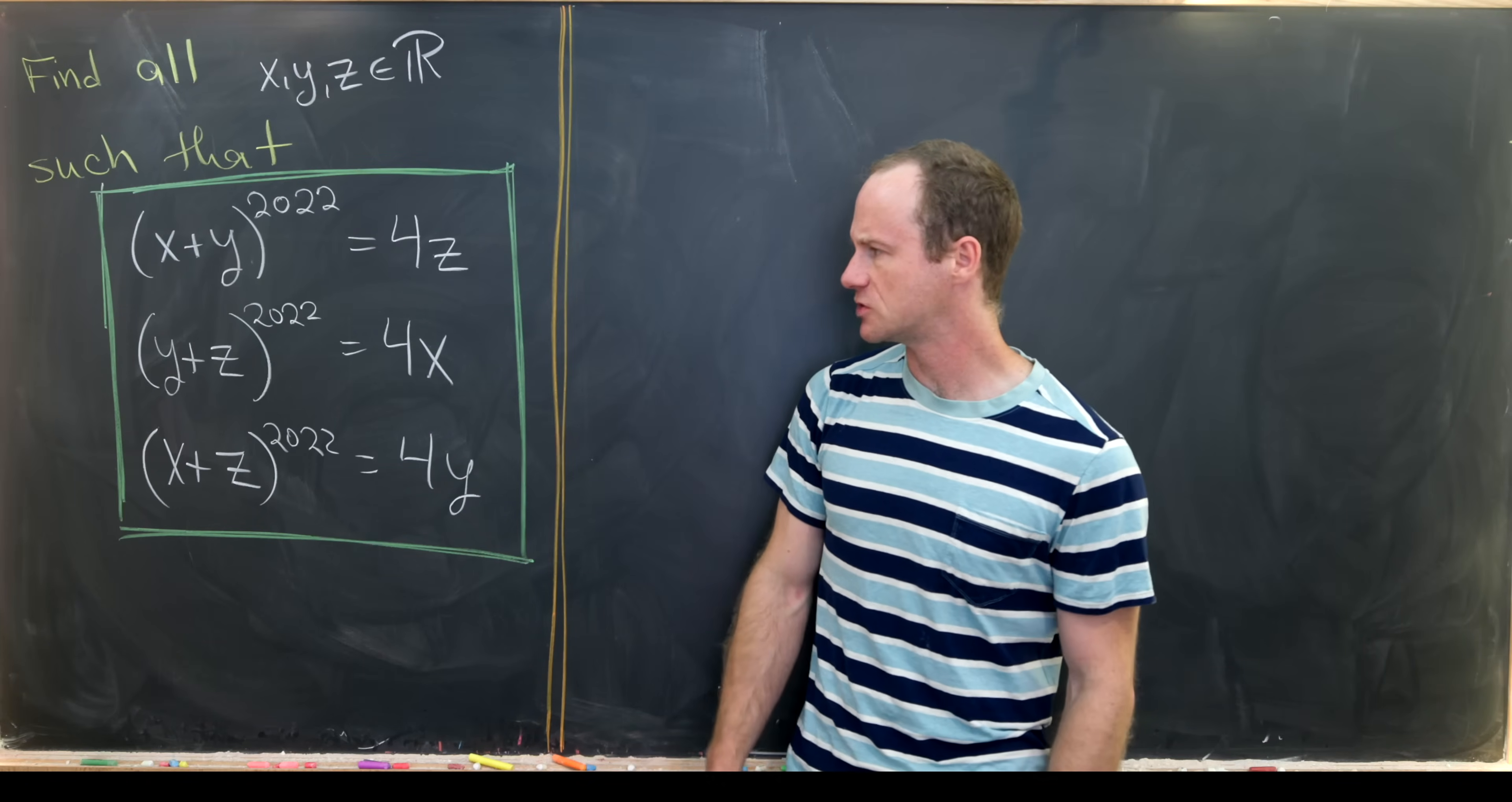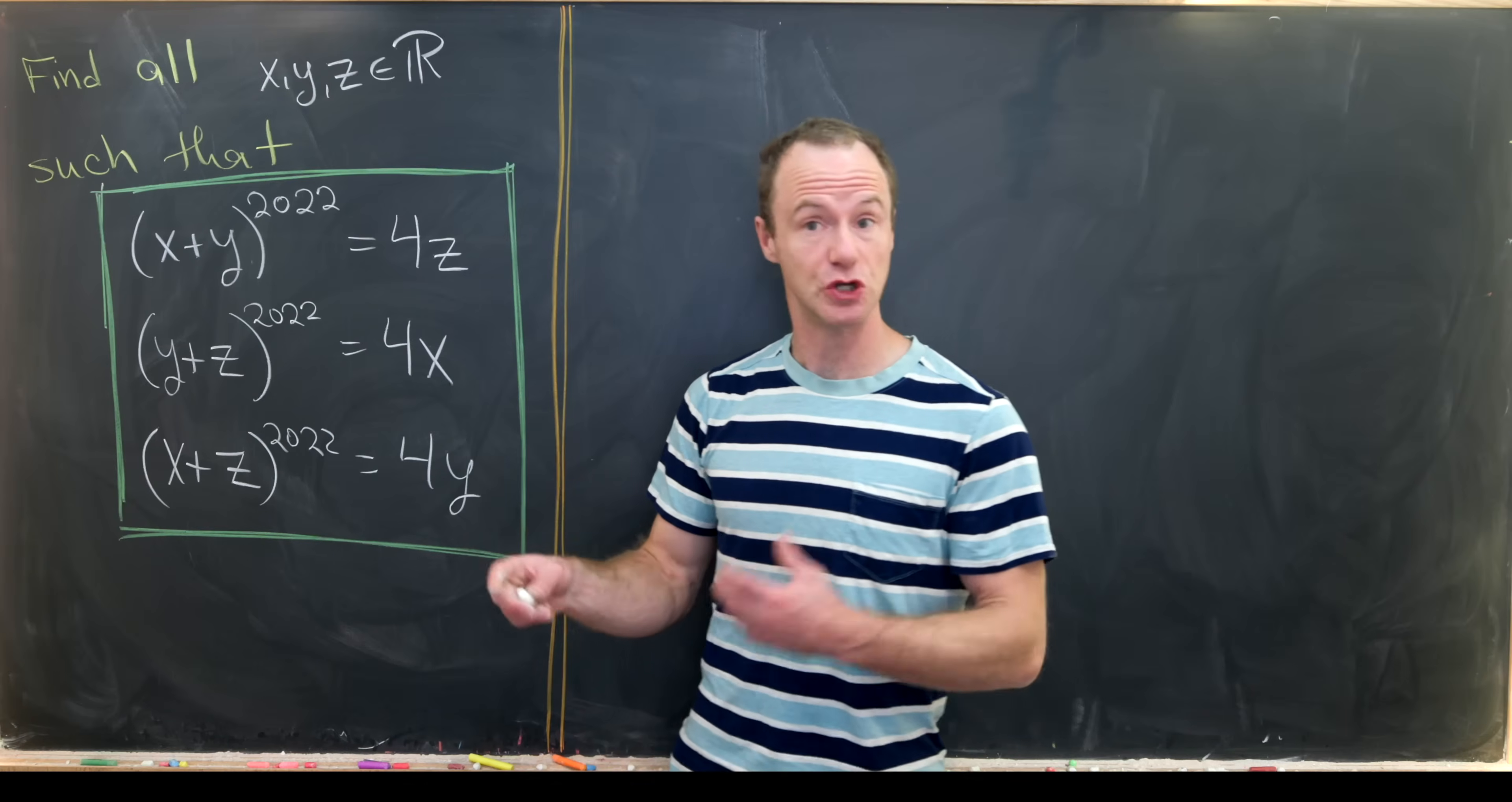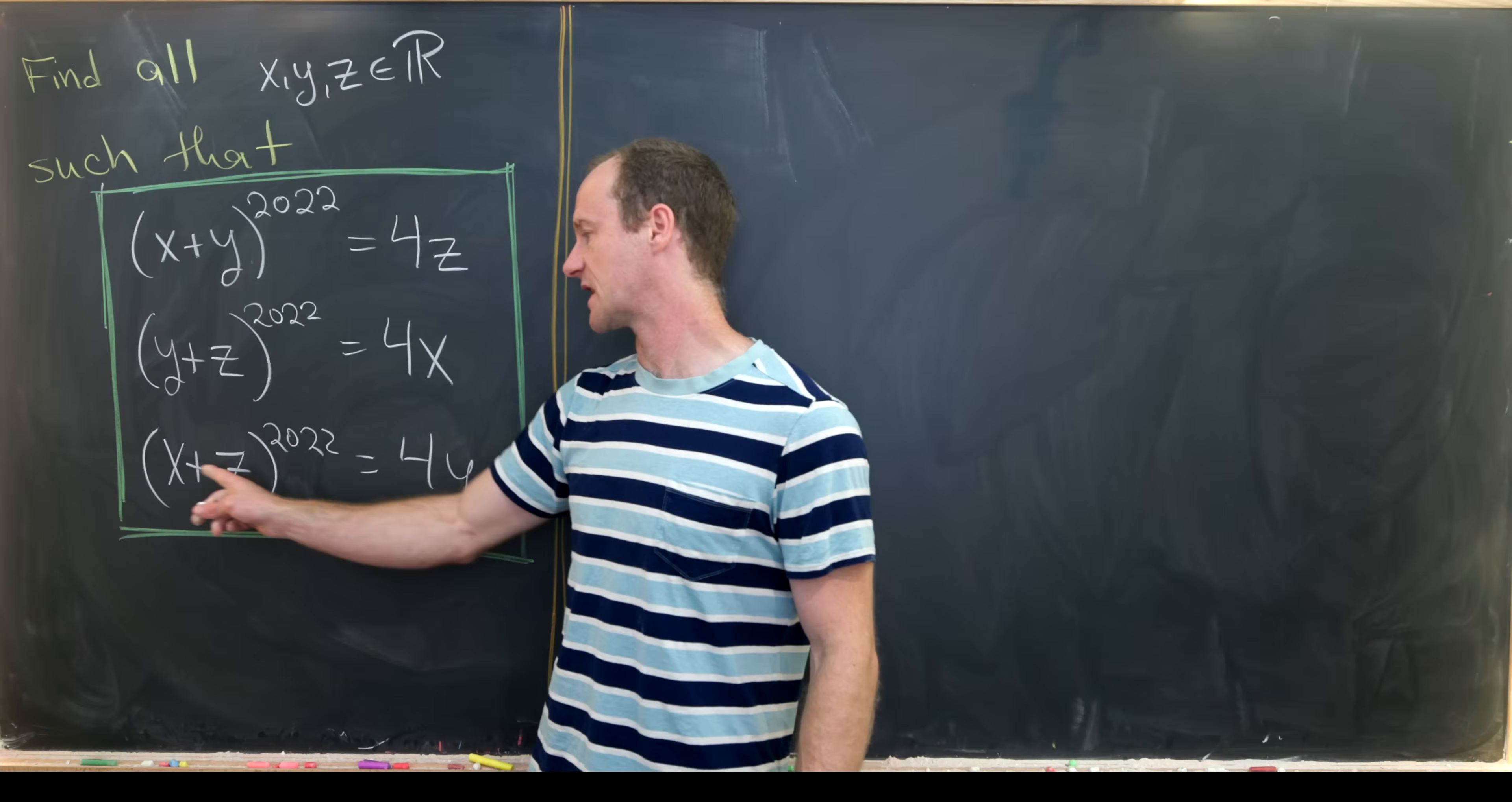Our goal is to find all real numbers x, y, and z such that (x+y)^2022 = 4z, (y+z)^2022 = 4x, and (x+z)^2022 = 4y.